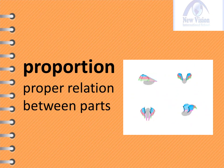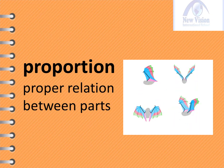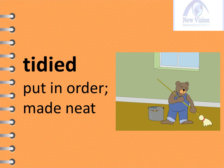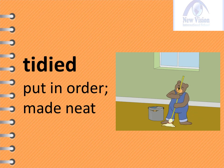Our next word is 'proportion.' Proportion means proper relation between parts. Sample sentence: You must measure carefully to be sure the proportion of the wings to the body is just right. Then we have the word 'tidied.' Tidied means put in order or made neat. Sample sentence: After it hardens, any crumbs of cement and plastic must be tidied up.